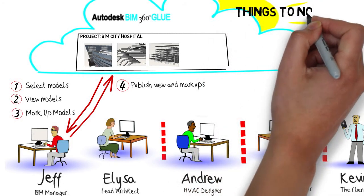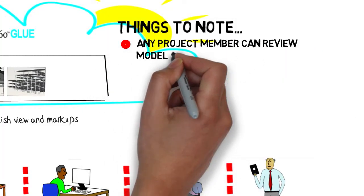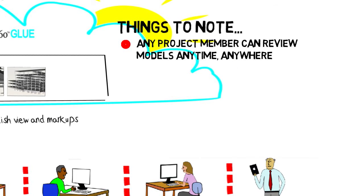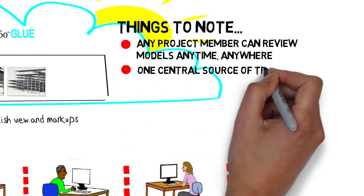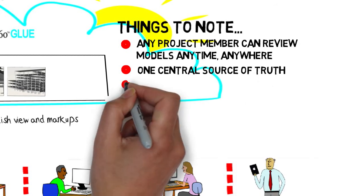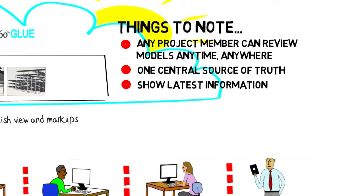Here are some things to note. First, any project member can review the models in BIM 360 Glue at any time from anywhere. There's one central source of truth. The views in BIM 360 Glue always show the latest information, so you're not getting confused with multiple versions on different people's machines.